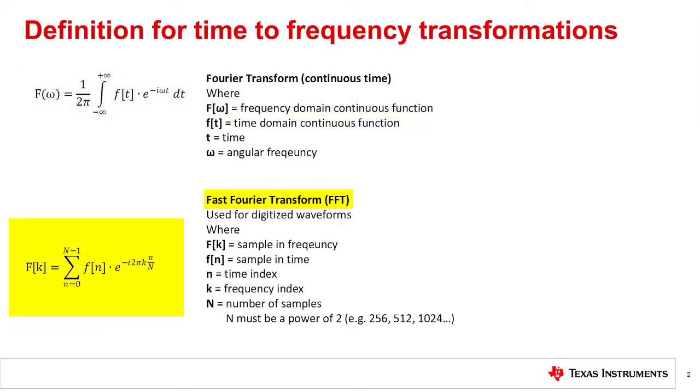The Fast Fourier Transform, or FFT, is designed to efficiently take discrete time domain data and convert it to frequency domain data. Since the FFT is designed to be used with discrete time data, it is commonly used to convert ADC data from the time domain to the frequency domain.